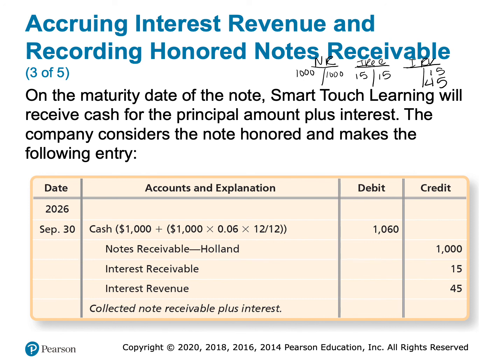The $1,060 that Lauren paid us is what we call the maturity value — the total amount paid back over the life of the loan. And September 30th of 2026 is the maturity date.